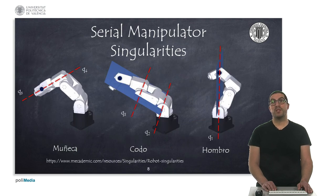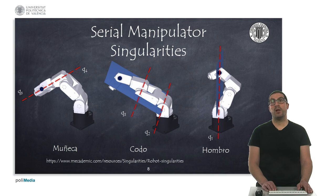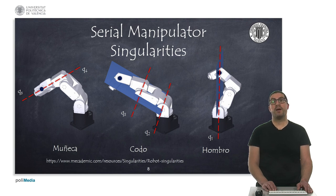Serial manipulator robots have three types of singularities: wrist, elbow and shoulder singularities. Wrist singularity occurs when axes four and six are aligned, as a consequence of the well-known gimbal lock. The singularity of the elbow appears in the change between the elbow-up and elbow-down configurations, just when the point of the wrist is contained in the plane formed by axes two and three. The singularity of the shoulder appears when the point of the wrist passes through the first axis of the robot.